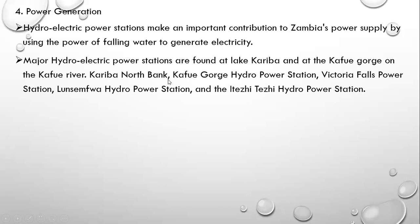The Kariba North Bank is our major hydroelectric power station. Then we have the Kafue Gorge hydro power station, Victoria Falls power station, Gonsenfo hydro power station, and the Itezhi-Tezhi hydro power station. These are our major hydro power stations in Zambia, all found on these drainage features — on Lake Kariba and the Kafue Gorge.